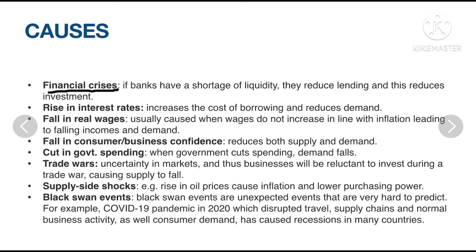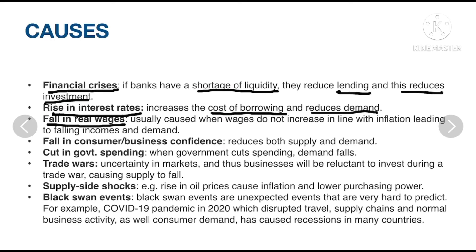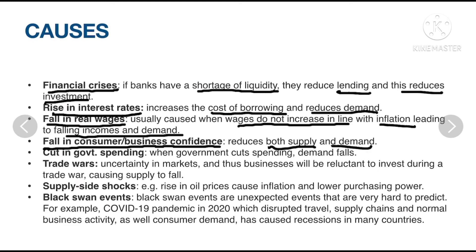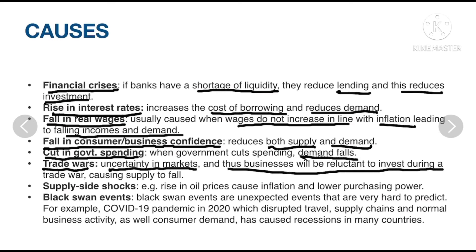Causes of recession: A financial crisis occurs when banks have a shortage of liquidity, reducing lending and investment. A rise in interest rates increases the cost of borrowing and reduces demand. A fall in real wages, caused when wages do not increase in line with inflation, leads to falling incomes and demand. A fall in consumer or business confidence reduces both supply and demand. A cut in government spending causes demand to fall as there is less provision of goods and services. Trade wars can make businesses reluctant to invest, causing supply to fall.